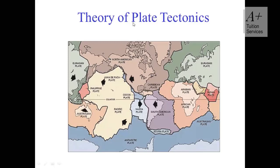All these plate margins — the boundaries meaning the lines between the plates — could either be a divergent, passive, or destructive plate boundary. Where the Nazca plate and the South American plate meet, they are moving towards each other — this is a destructive plate boundary. Where the Pacific plate and the Nazca plate are moving away from each other, they are constructive. And where two plates slide past each other, that is transform.